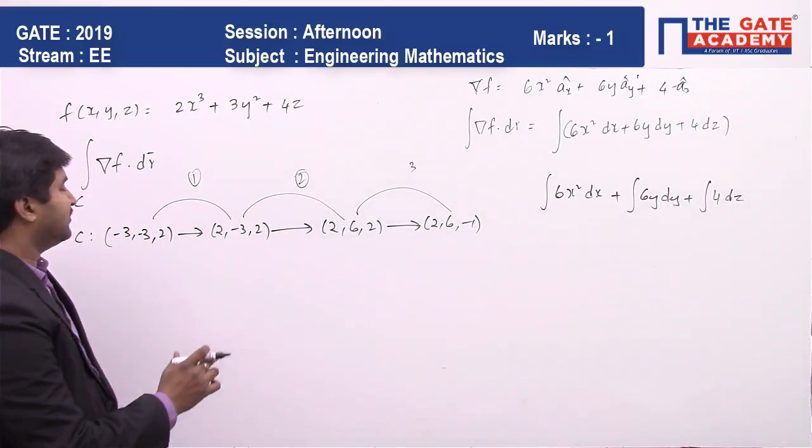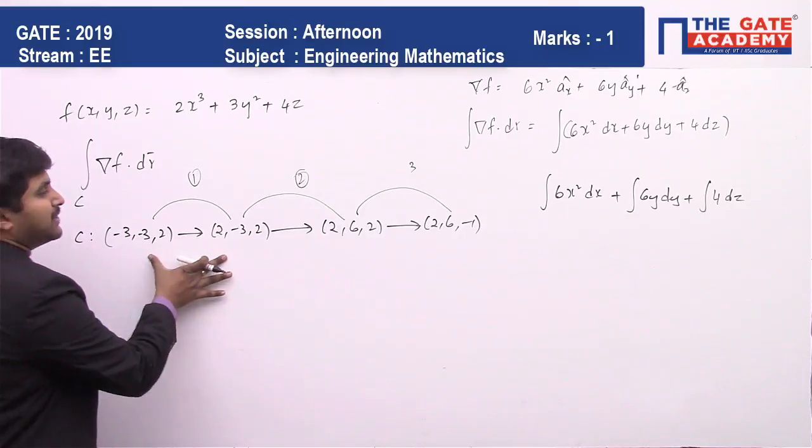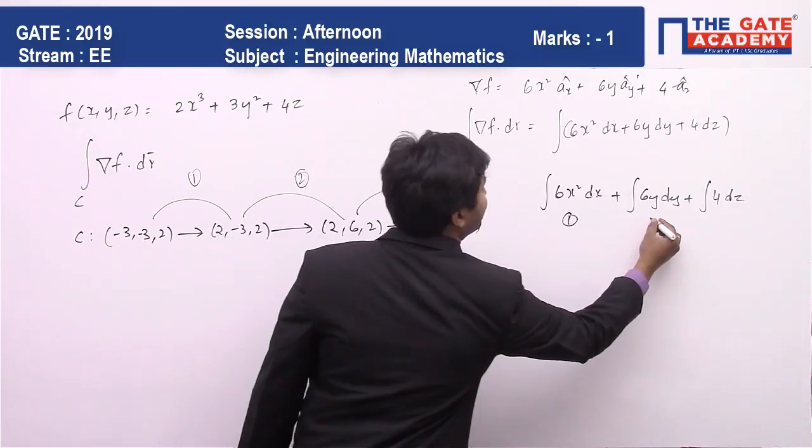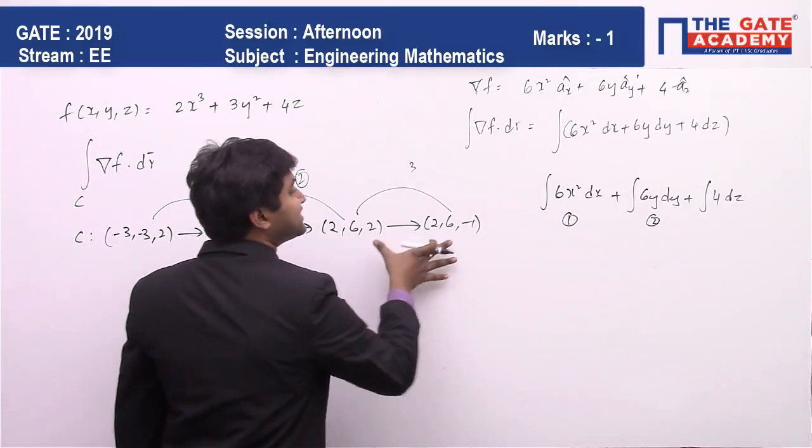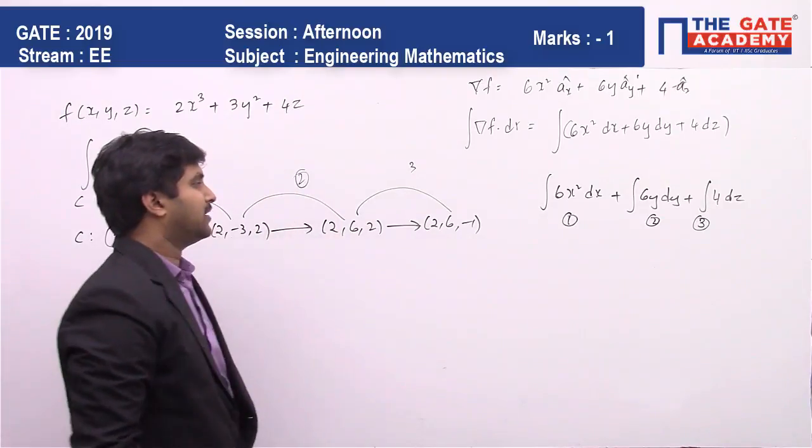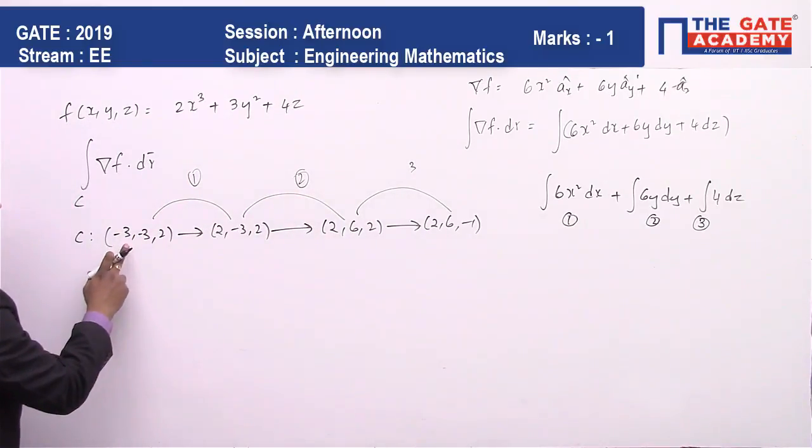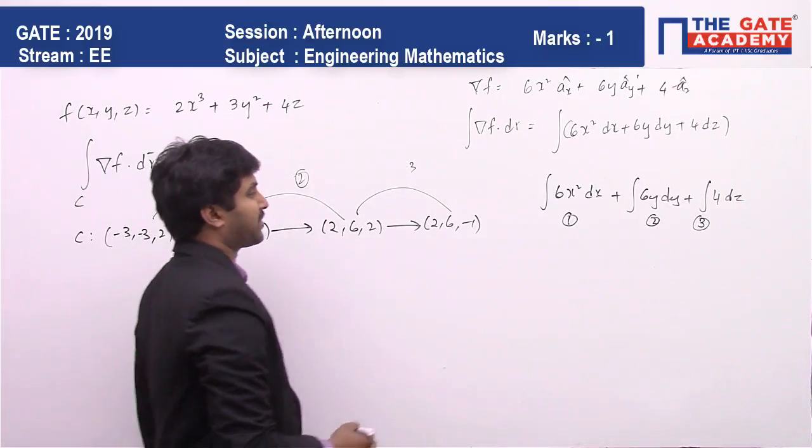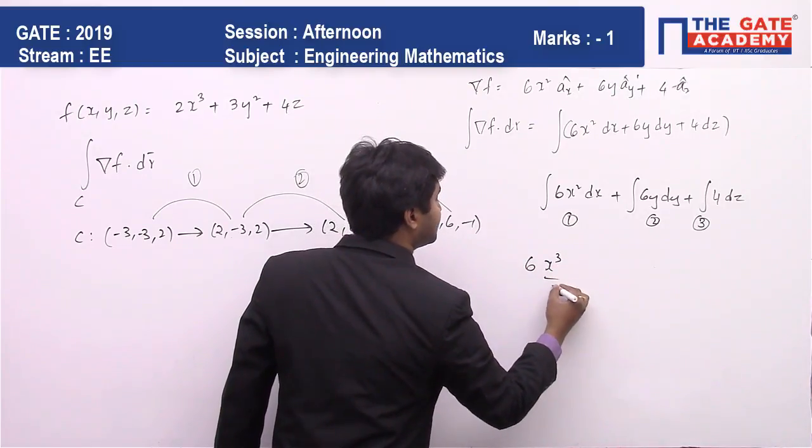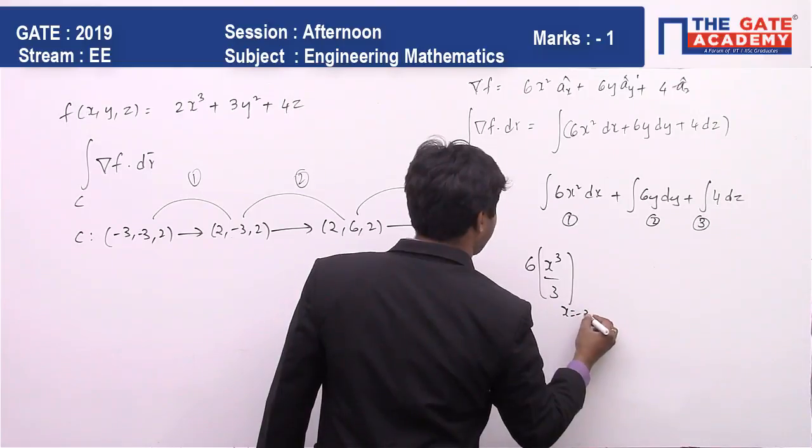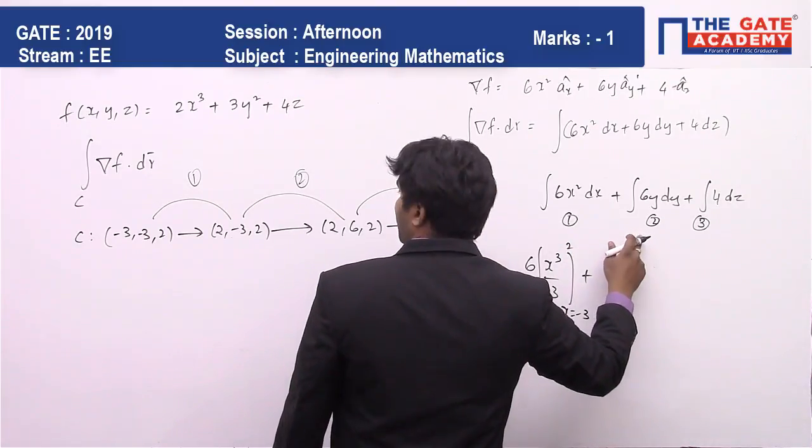Now if you closely observe, in the first path y and z values are constant and only x is changing. So let me write 6x, which is x³/3 by integration, where the value of x is changing from -3 to 2 in the first path, and in the second path...